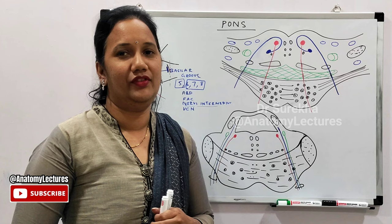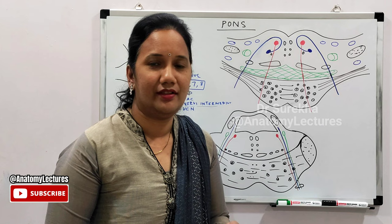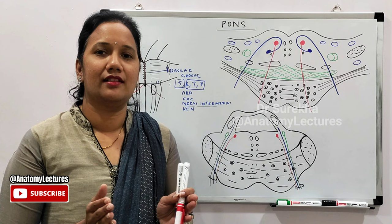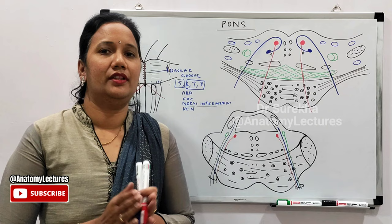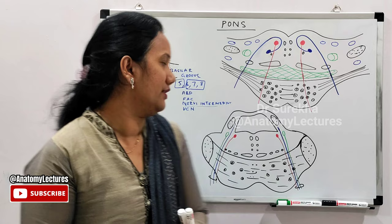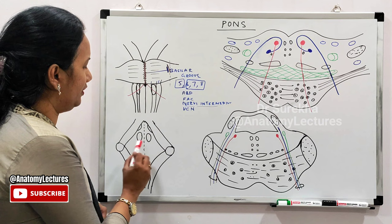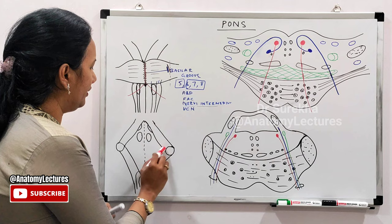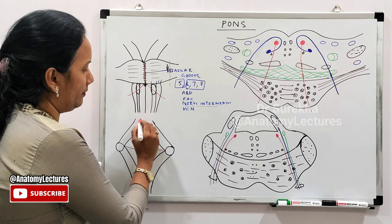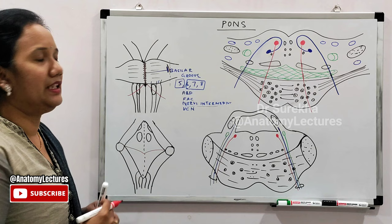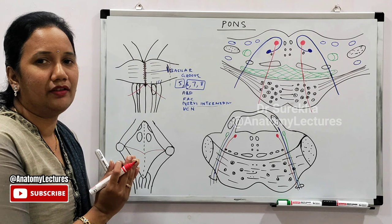Now the dorsal surface — the posterior surface of the pons — is related to the cerebellum and is covered by it. It is separated from the cerebellum by the fourth ventricle. The dorsal surface of the pons forms the upper triangular part of the floor of the fourth ventricle.